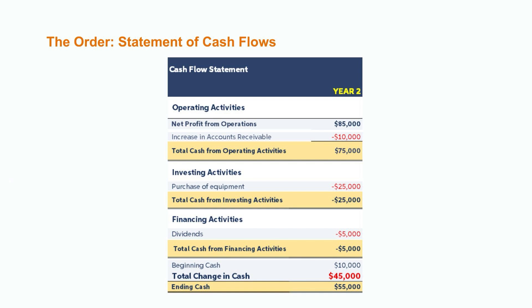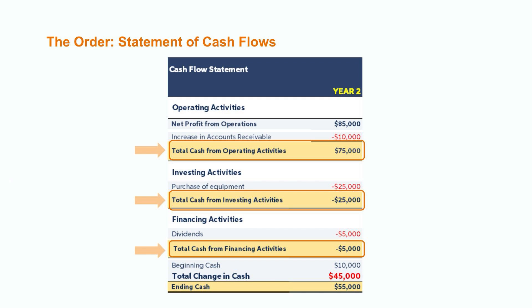Now that the income statement and balance sheet are complete, we can prepare the statement of cash flows. Here we work to explain the changes that took place to cash during the period. In this example, we can see that the company had a total change in their cash balance this period of $45,000 across operating, investing, and financing activities. As an example, a company would take note of the changes in their equipment balance during the period by looking at their balance sheet. In the event they bought $25,000 worth of new equipment, this change in cash would get recorded under investing activities on the statement of cash flows. This same step would be repeated for each account that impacts cash so that users have a good understanding of how the company is managing their cash flows.